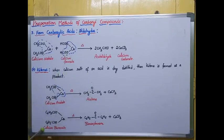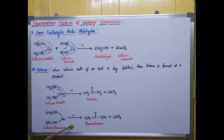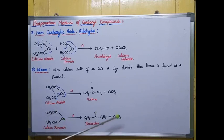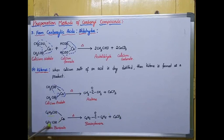In the second example, calcium benzoate is an aromatic compound, so aromatic ketones are produced. Calcium benzoate undergoes distillation and produces benzophenone (C6H5COC6H5), which is an aromatic ketone, and CaCO3 comes out as a byproduct. Next, let us see one more method of preparation.